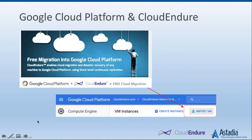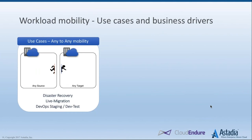From a Google Cloud Platform perspective, Google has integrated CloudEndure directly into their cloud console. Any customer or partner accessing the Google Cloud console today will see under Compute Engine a button called Import VM — that's CloudEndure behind the scenes — allowing no-cost migration to migrate workloads from any infrastructure, whether on-premise or other cloud providers like AWS or Azure, right into GCP.